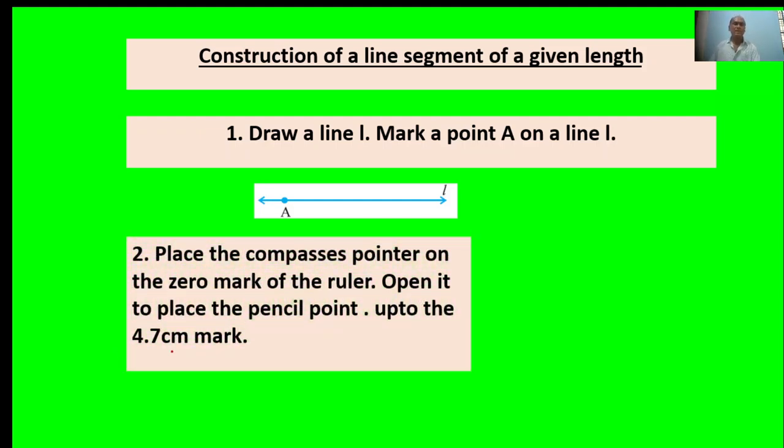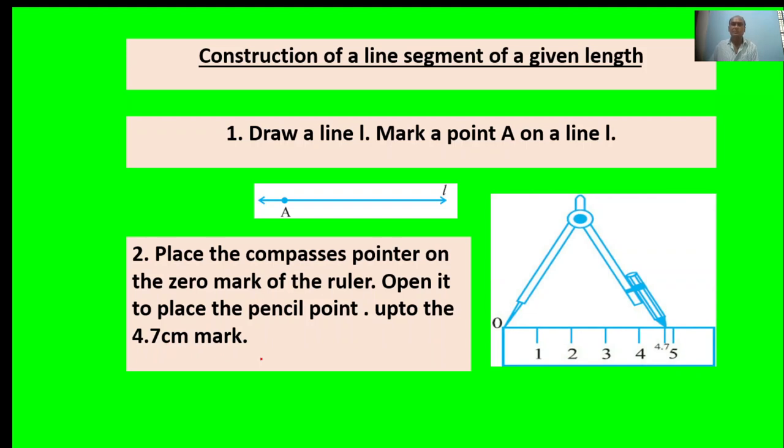Second point: Place the compass's pointer on the zero mark of the ruler. Open it to place the pencil point up to the 4.7 mark. Here, a figure is given showing 4.7 centimeters.